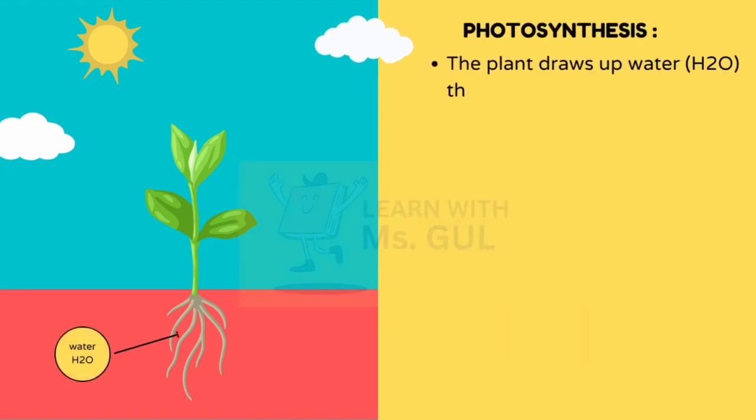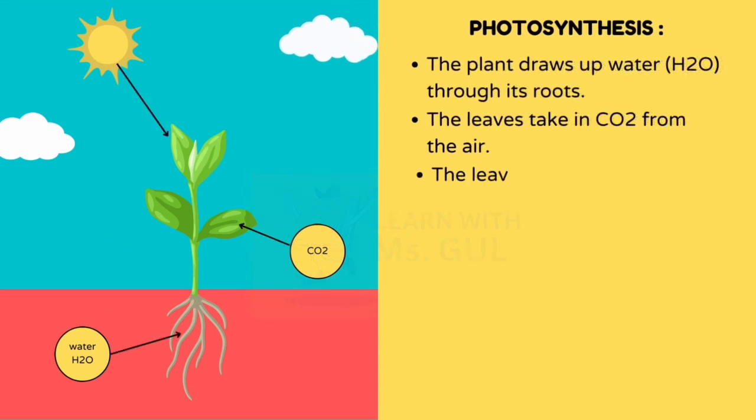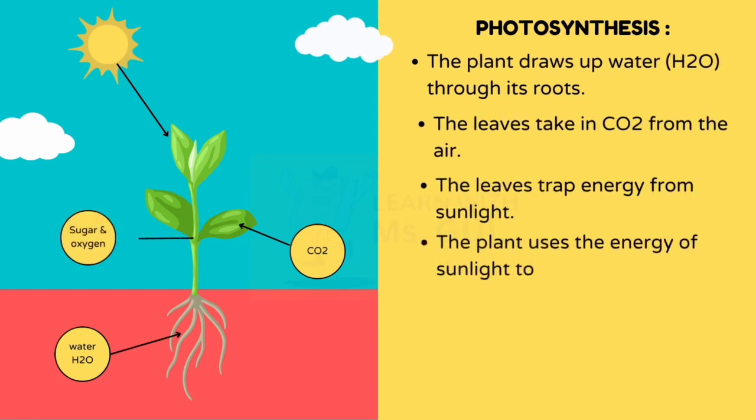In the process, the plant draws up water through its roots. The leaves take in carbon dioxide from the air. The leaves then trap energy from sunlight. The plant uses the energy of sunlight to turn water and carbon dioxide into sugars and oxygen.